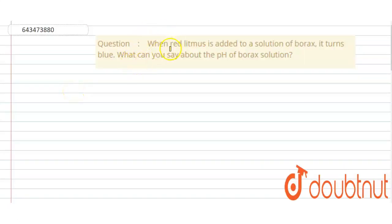This question basically says that when red litmus is added to a solution of borax, it turns blue. What can you say about pH of borax solution? Let's write down the formula of borax.